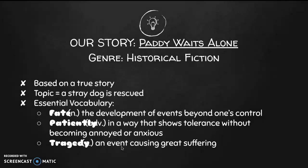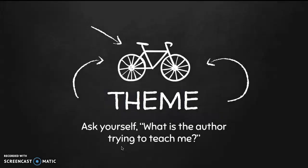The story we're going to read today is called 'Patty Waits Alone' and it's a historical fiction story. Remember when we read the story 'Maker's Candle' and it took place during the Depression? Well, this is another story that takes place during the 1930s period and it's based on a true story. The topic, or what the story is about, is a stray dog who is rescued. Some of the words you will see in this story include: 'fate,' a noun that means the development of events beyond one's control; 'patiently,' an adverb that describes a way that shows tolerance without becoming annoyed or anxious; and 'tragedy,' a noun that means an event causing great suffering.